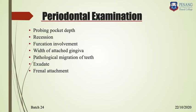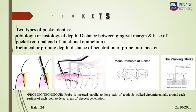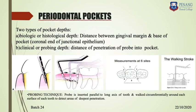Next is the periodontal examination, which has six findings: probing pocket depth, gingival recession, furcation involvement, width of attached gingiva, pathological migrations, and frenal attachments. There are two types of pockets: the biological pocket — the distance from the gingival margin to the base of the pocket or the coronal end of the junctional epithelium — and the clinical pocket, which is the distance of penetration of the probe. The clinical pocket will be shallower than the biological pocket.